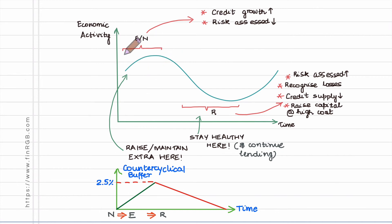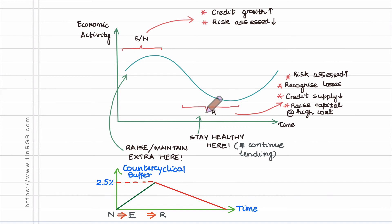So if a surplus has been generated during the expansionary period, when we enter the recessionary period, because a surplus has already been generated, the entire banking system can stay healthy during this period and continue to lend. Funds continue to flow throughout the entire economy and banks do not slam the brakes on credit generation.